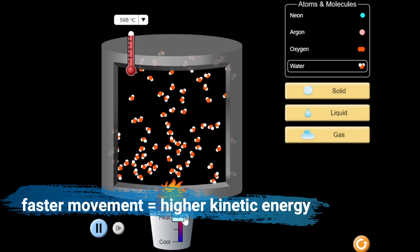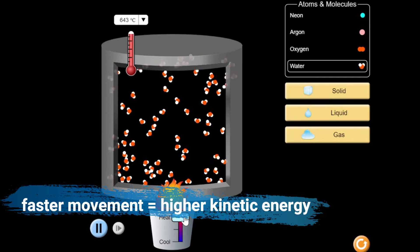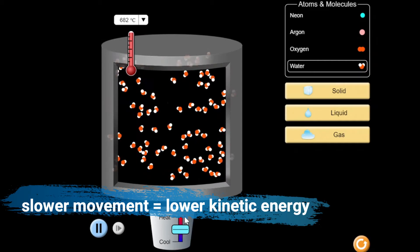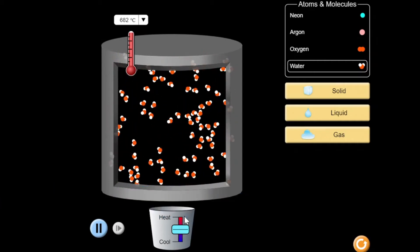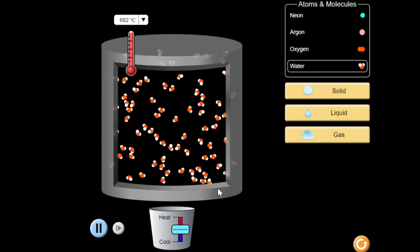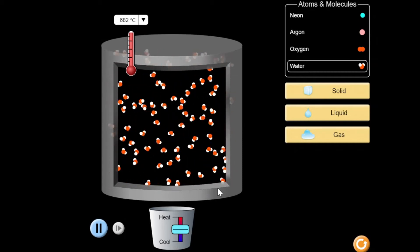The faster the motion of the particles, the higher their kinetic energy. While the slower they move, the lower their kinetic energy. Observe now their movement and their distances to one another. Is it the same with your predictions?